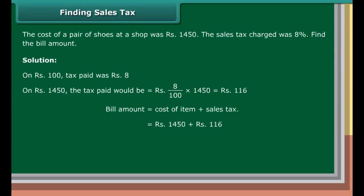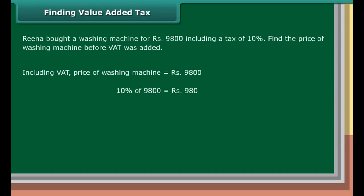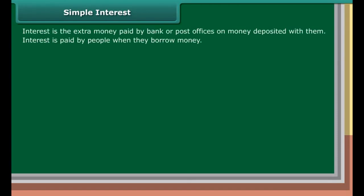Finding sales tax. The cost of a pair of shoes at a shop was rupees 1,450. The sales tax charged was 8%. Find the bill amount. Solution: On rupees 100, tax paid was rupees 8. On rupees 1,450, the tax paid would be rupees 8 upon 100 into 1,450, which is equal to rupees 116. Bill amount equals cost of item plus sales tax, which is rupees 1,450 plus rupees 116, which equals rupees 1,566.